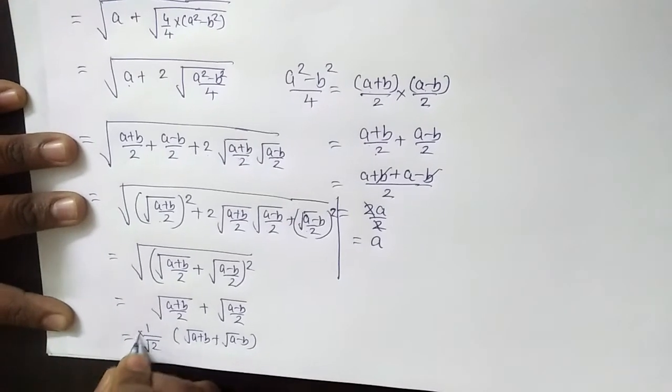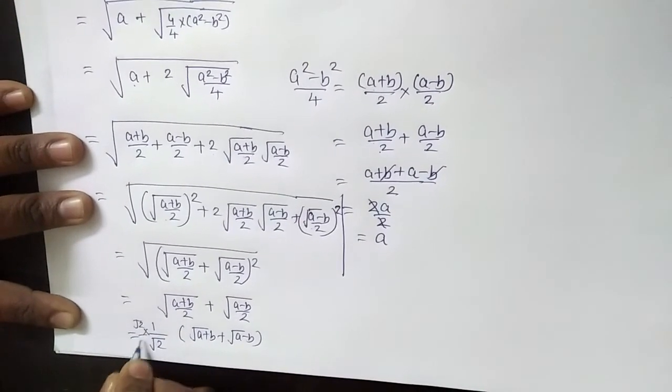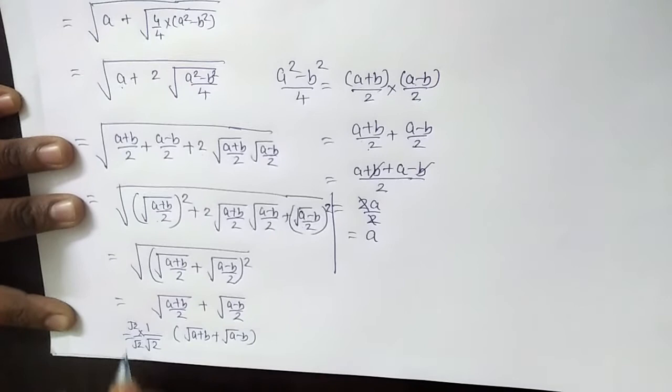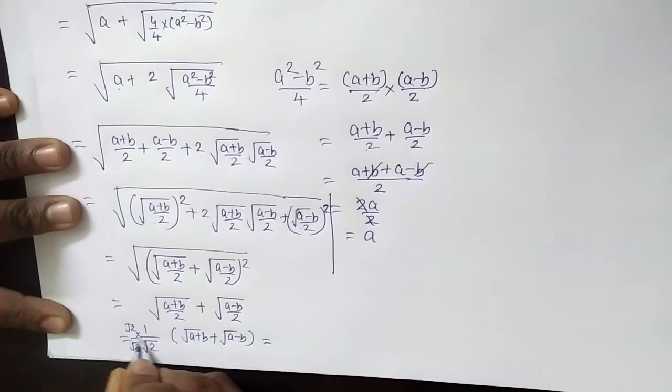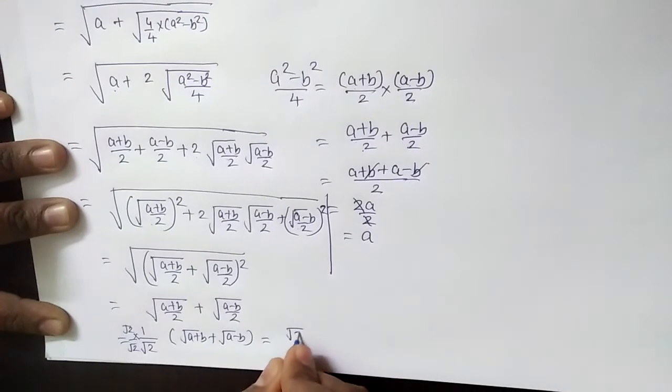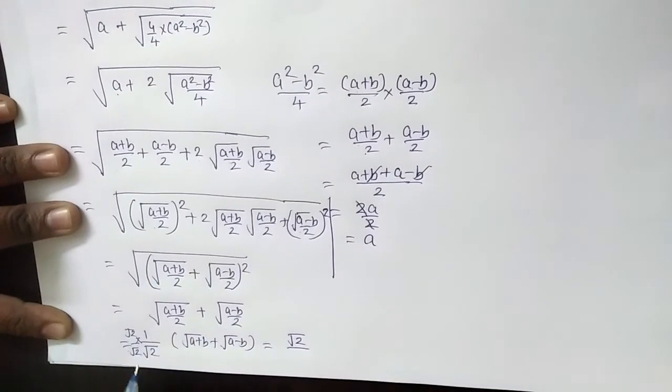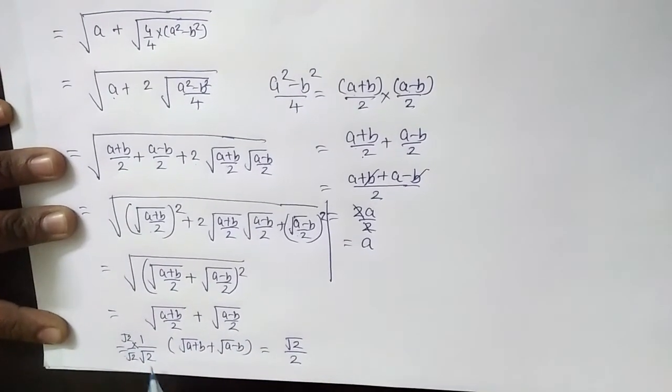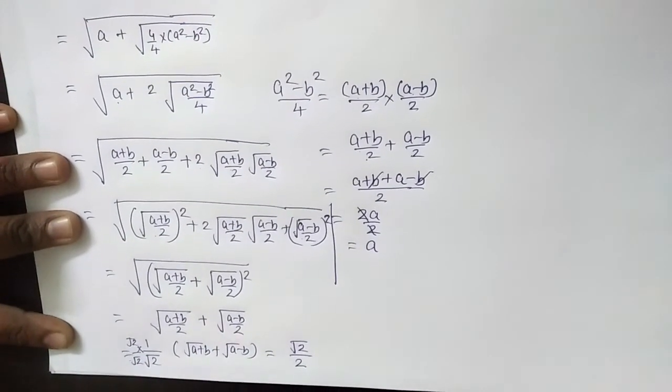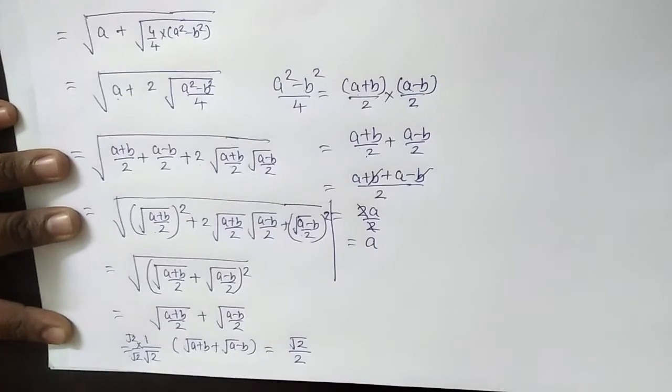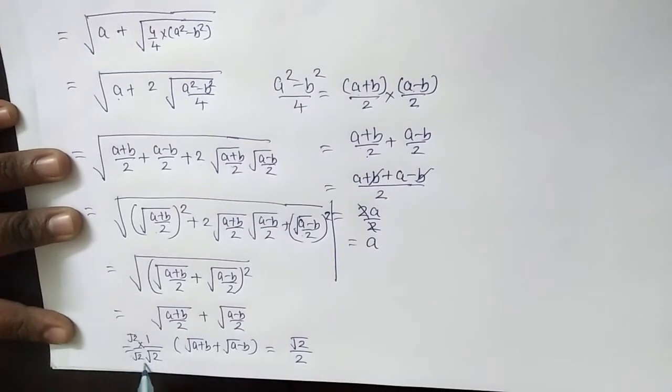It has to rationalize, so it will multiply by root 2 divided by root 2. Hence I get the final answer: root 2 upon root 2 into root 2 will convert to 2. We need to always rationalize the denominator. In denominator, irrational number is not at all allowed.